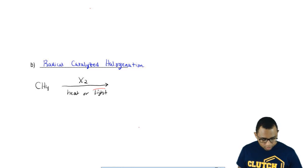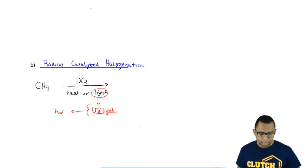What we do with this methane is we use X2 over heat or light. Not just any type of light, UV light. This UV light can be represented by symbol hv. When you see hv, it just means UV light. When I say X2, X equals Cl or Br.